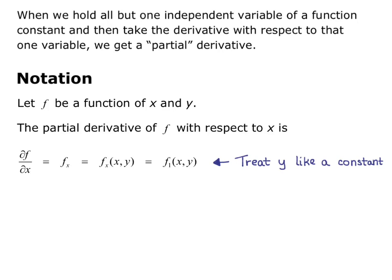When taking the partial derivative with respect to x, we treat y like a constant. Basically, if we moved in the x direction from any point, the partial derivative of f with respect to x gives us the slope of the tangent line in the x direction.